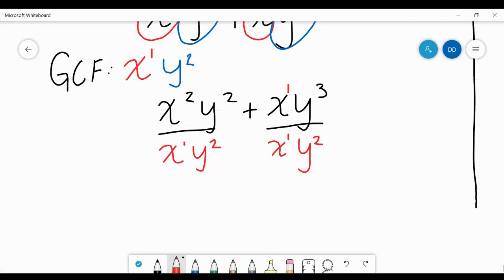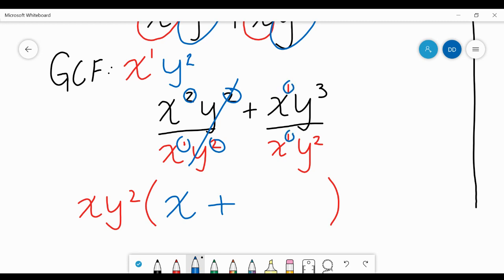Whenever we're factoring out a GCF, the GCF is always gonna go on the outside of the parentheses. That's super important. And then our answer is gonna go inside the parentheses. So here I'm gonna subtract these exponents: 2 minus 1 is gonna give us 1, so this is X to the first power. Here we have 2 minus 2 which is 0, so these just cancel out. Plus, 1 minus 1 is 0, so that's gonna just cancel out. And then 3 minus 2 is 1, so just Y.